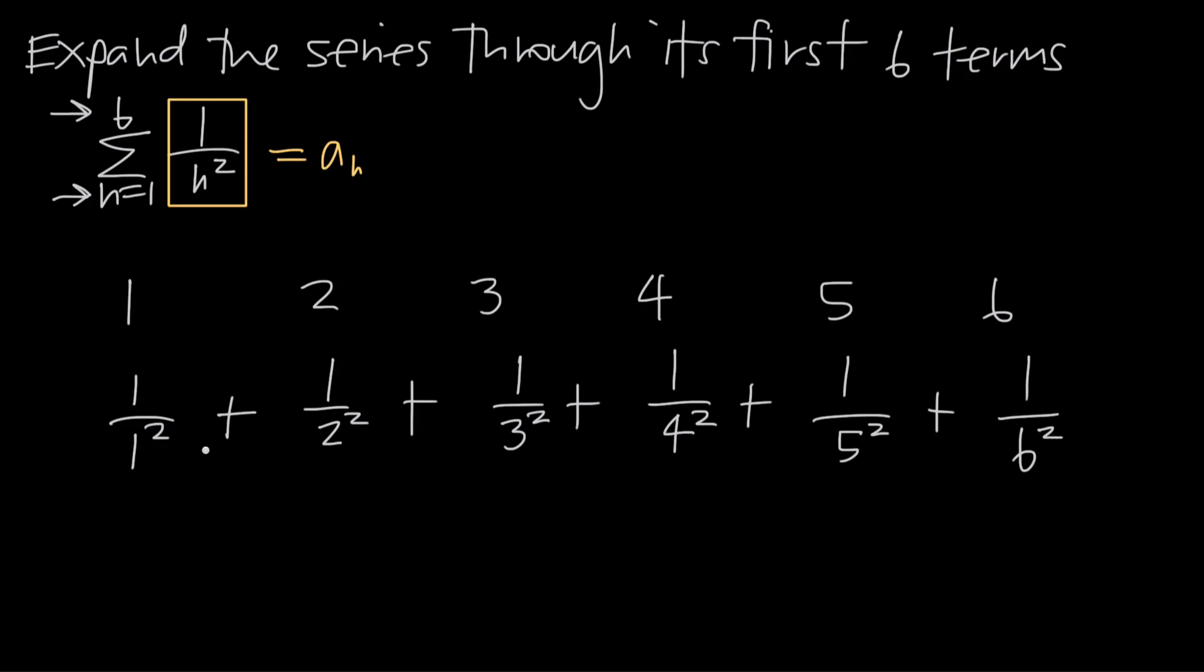So now we just need to simplify. Here in the denominator, we get 1 squared, which is just 1. 1 divided by 1 is 1, so here we get 1. Then we're going to get plus 2 squared is 4, so we get 1 fourth. 3 squared is 9, so we get 1 ninth. 4 squared is 16, so 1 over 16, and then we're going to get 1 over 25, and 1 over 36.